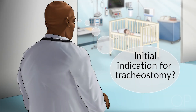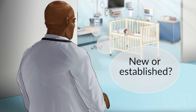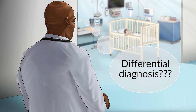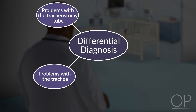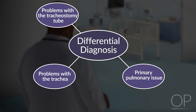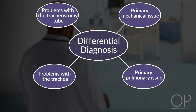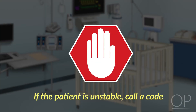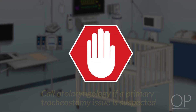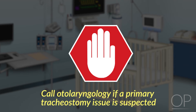As you're walking to the patient's room, review the initial indication for the tracheostomy and if this is a new or established tracheostomy. Your differential diagnosis will include problems with the tracheostomy tube, problems with the trachea, or a primary pulmonary issue. Of course, you'll also need to consider a primary mechanical issue, as the problem can be with the equipment itself. Upon entering the room, assess the overall clinical condition and stability of the patient. If the patient is unstable, don't be afraid to call a code, and if a primary tracheostomy issue is suspected, call otolaryngology.